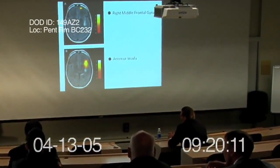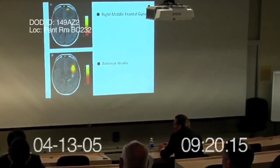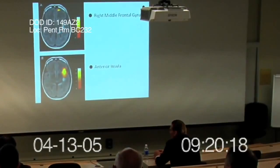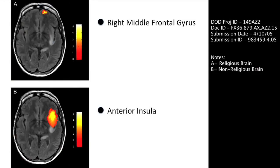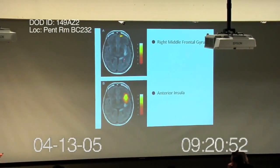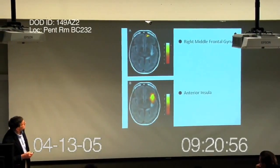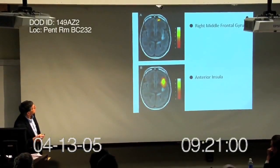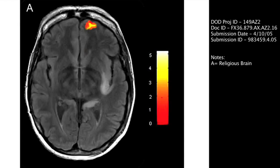We have some very remarkable data in this next slide. Here we have two brain scans — these are fMRIs. These are two different individuals with different levels of expression of VMAT2. On top is an individual who's a religious fanatic, and we've repeated this numerous times, that has high levels of VMAT2. This individual down here had low levels of the VMAT2 gene and would self-describe as not particularly religious. In each case, these individuals were read a religious text. This individual lit up the right middle frontal gyrus, shown here.